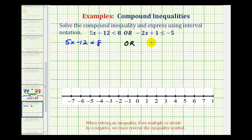And then we'll solve the inequality negative 2x plus 1 is less than or equal to negative 5. So to isolate x on the left side here, we'll start by adding 12 to both sides.